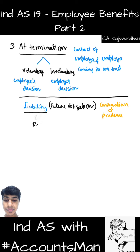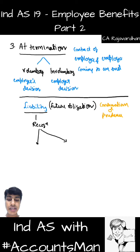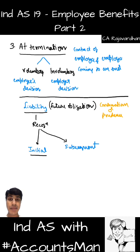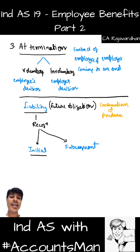With regard to recognition, there are two things to remember: initial recognition and subsequent recognition. The question is when do we initially recognize this liability? This liability should be recognized when the organization makes an announcement regarding termination benefits and is in a position where it cannot withdraw that announcement. So when the organization doesn't have an option to withdraw the benefit it has announced, it is a liability that needs to be recognized on that day.